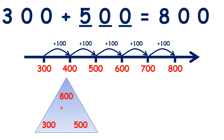We need two zeros after the 5 to show that we don't just have 5 — we have five hundreds. Here we have a number family triangle. We have 300 and 500 at the bottom and 800 at the top, because 300 plus 500 is 800.